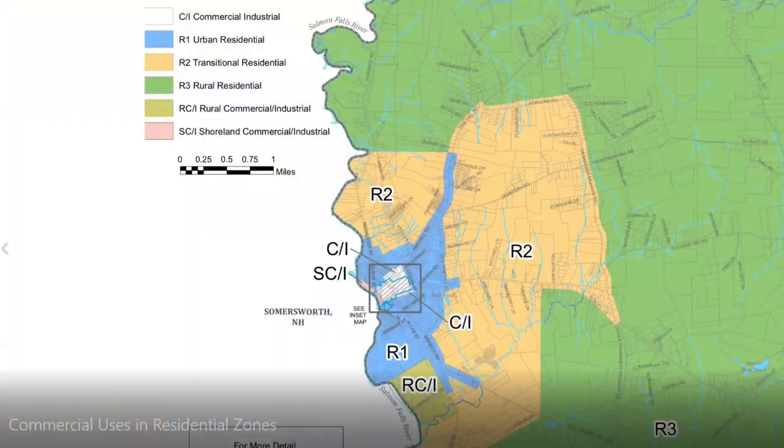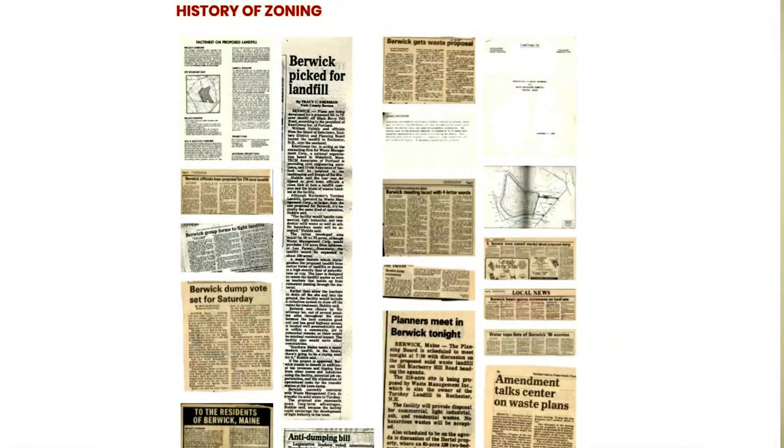A little bit of history on the land use ordinance: on the town website there's actually a history of Berwick zoning. Berwick did not have zoning until about 1991. A site plan review ordinance was put in in 1986, it was repealed and then put back in.